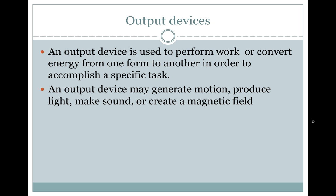Output devices. An output device is used to perform work or convert energy from one form to another in order to accomplish a specific task. An output device may generate motion, produce light, make sound, or create a magnetic field.